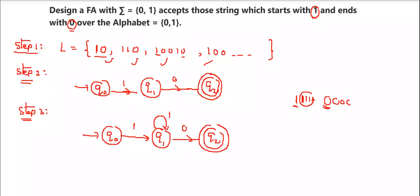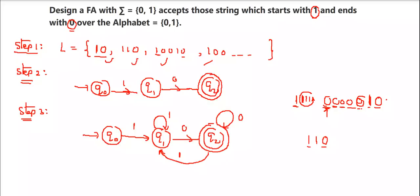After reaching q2 on the first 0, if any further 0s come, the string still ends with 0 — so we add a self-loop on q2 for input 0. What if a 1 comes after q2? You again need to look for a 0 to end with, so you go back to q1 and wait there. Once a 0 is seen again, you return to q2. For example, reading '1', '1', '0' — it starts with 1 and ends with 0, which is accepted.